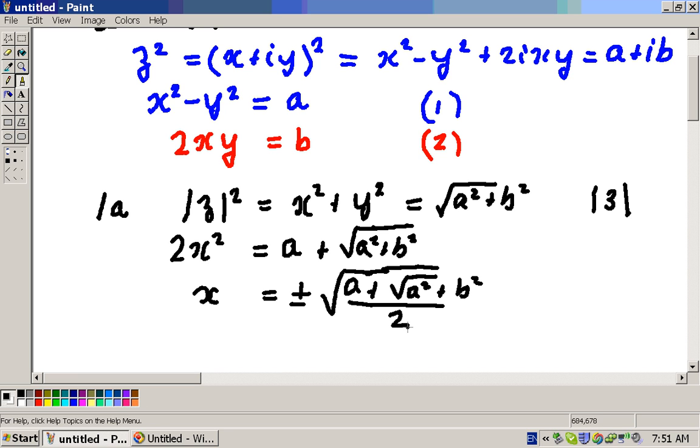So we've found X, or two values for X. So how do we find Y? Well, to find Y we use equation 2. If we take equation 2, then Y is equal to B divided by 2X.